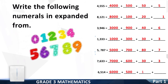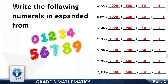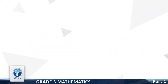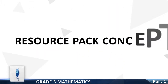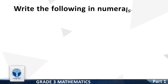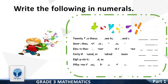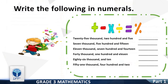Now move to the next number: 6,514. First expanded form: 6,000. Next: 500. Next: 10. Next: 4. Let's start from the next resource pack concept: Write the following in numerals. The first numeral is 25,205.